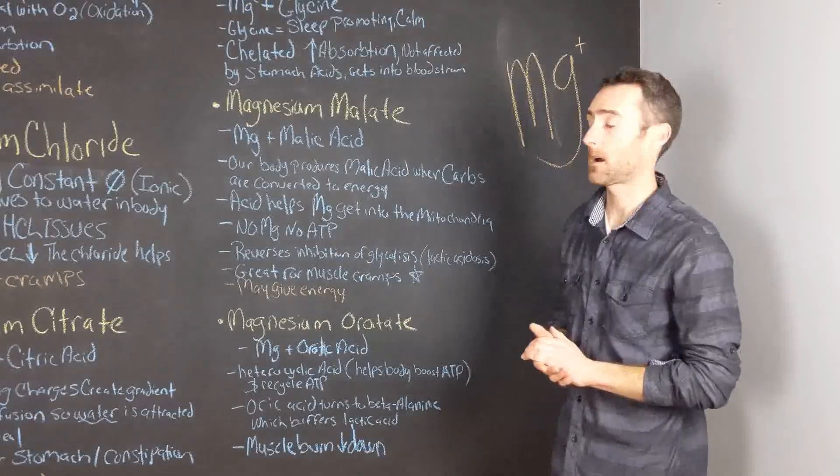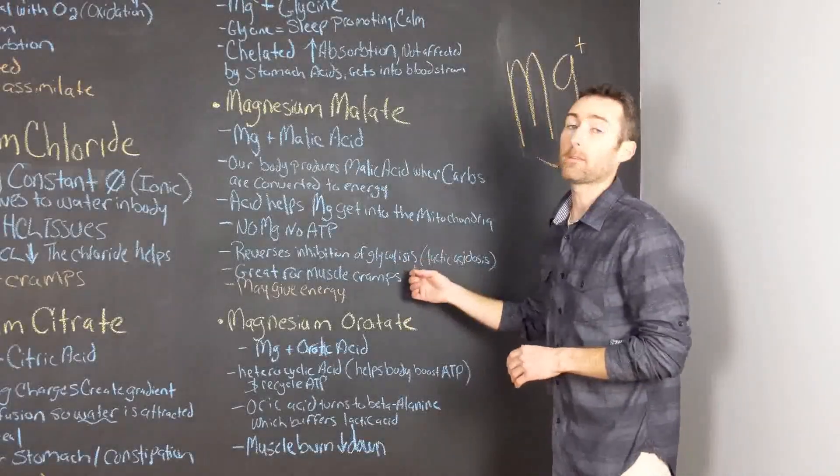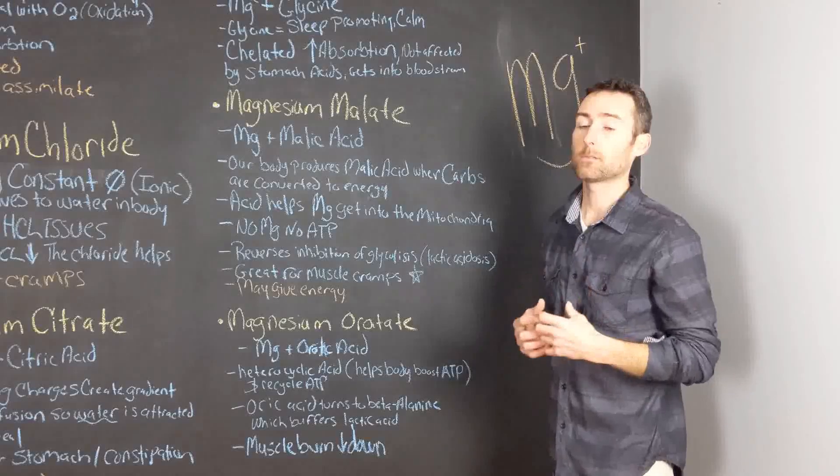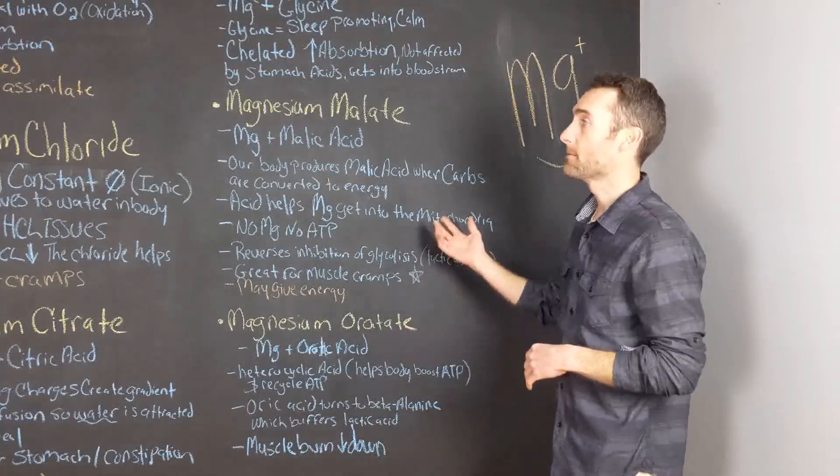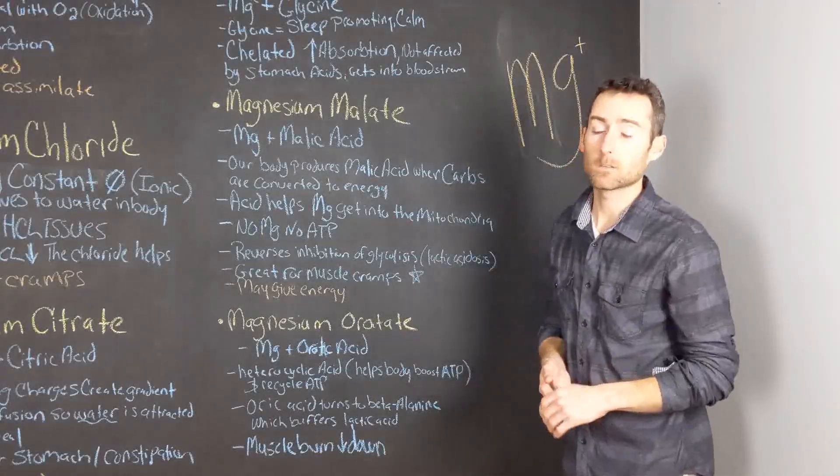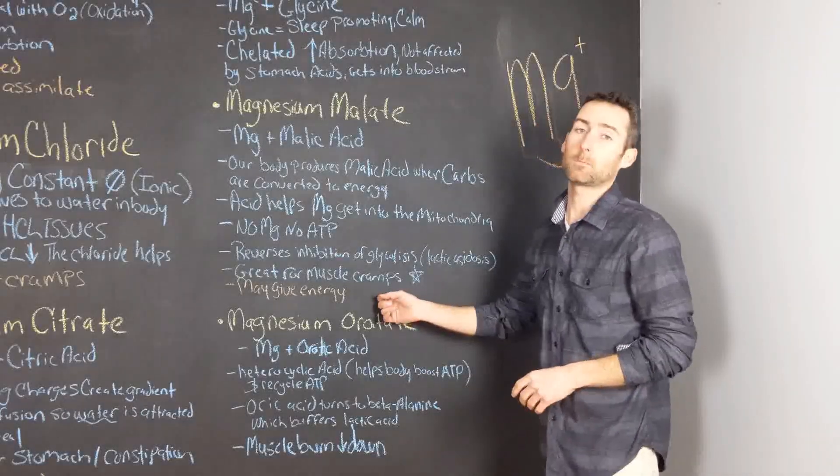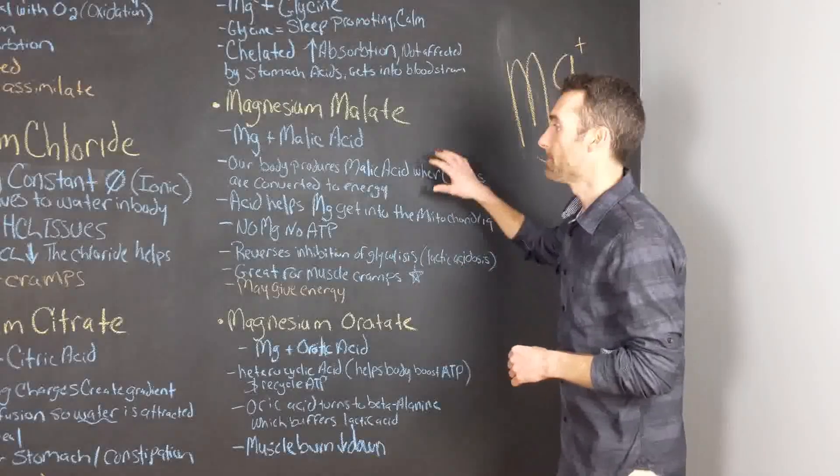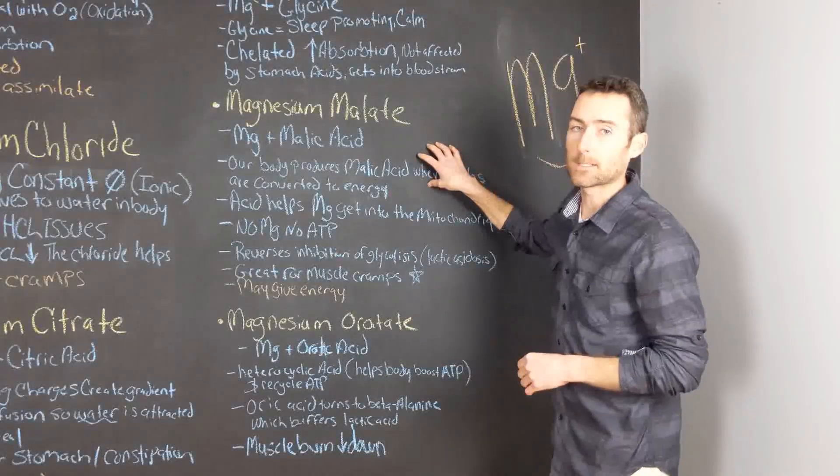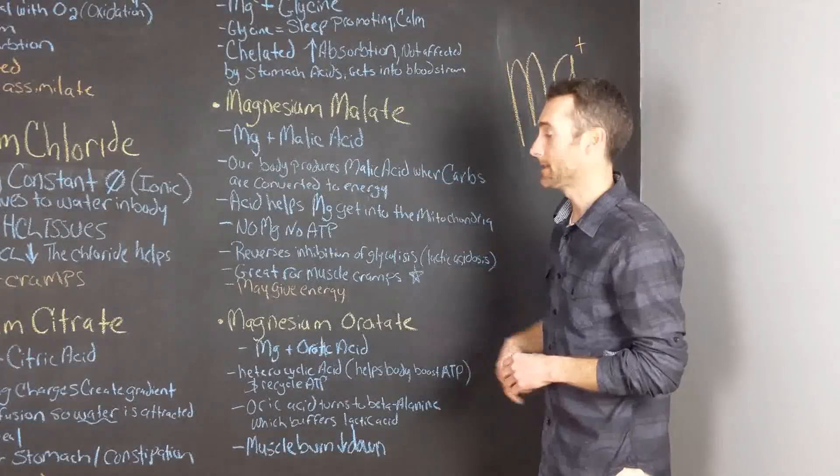It reverses the inhibition of glycolysis. It's great for muscle cramps. I personally recommend this for muscle cramps. If you take 200 to 300 milligrams of this, your muscle cramps are substantially less. The only problem with this magnesium, it actually gives you energy because of the magnesium getting into the cells and actually pushing the production of ATP.